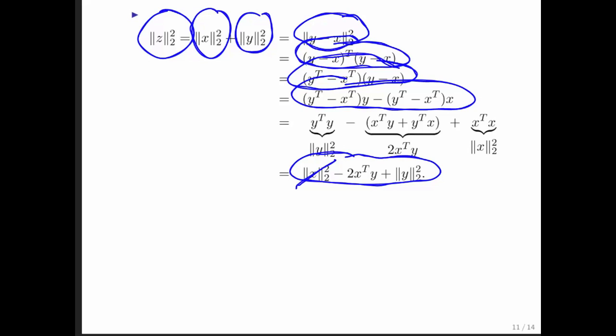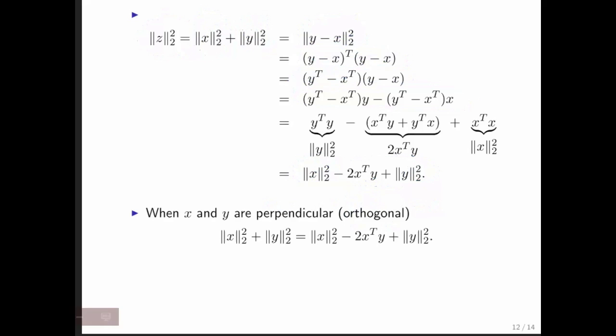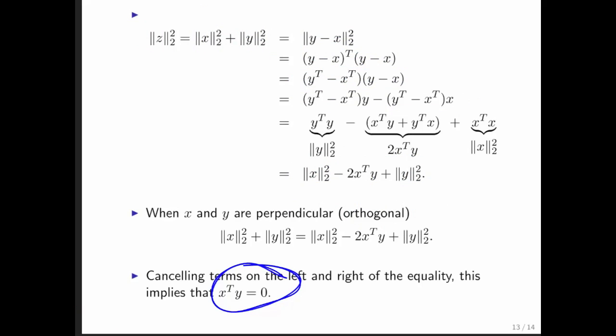If we then cancel terms on the left and right of the equality, we find that 0 equals minus 2x transpose y, and therefore this must equal 0. So the two vectors meeting at a right angle, meaning they are orthogonal, implies that the dot product equals 0, and that's actually an if and only if.